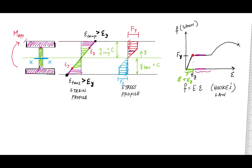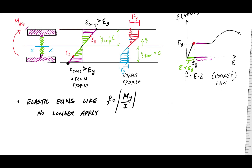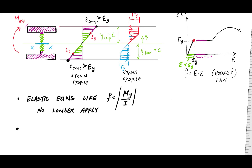It would be great if we could use the flexure formula to calculate the applied moment, but because the strain and stress profile is no longer linear elastic, all our equations from linear elastic mechanics of materials no longer apply. The way we would determine the moment is by section equilibrium — summing forces in the horizontal direction and summing moments about a point.